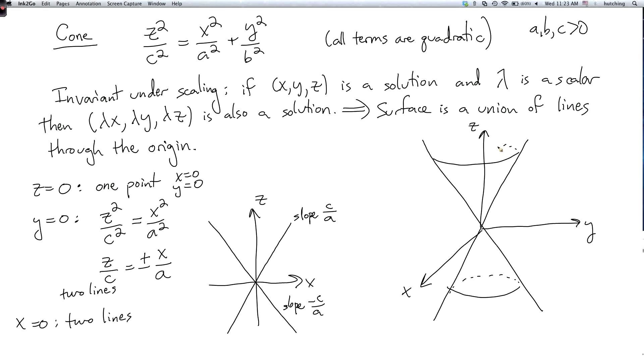And again the horizontal slices are ellipses. Because if you set z equal to a constant you get the equation for an ellipse in the xy plane.